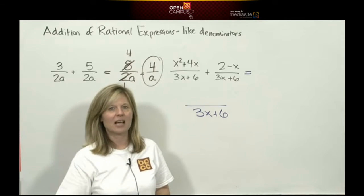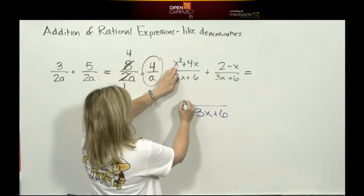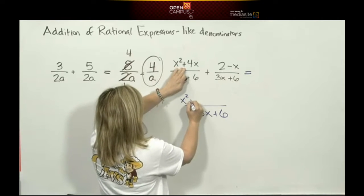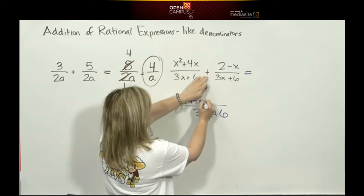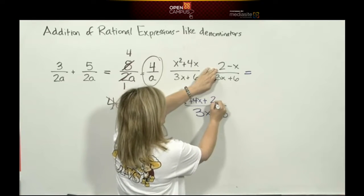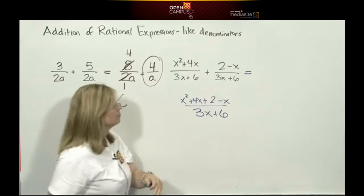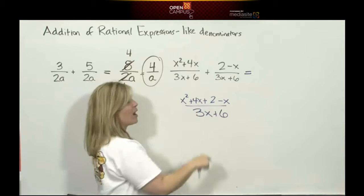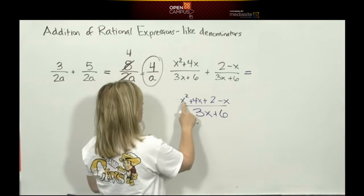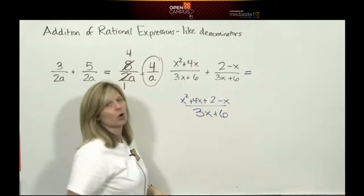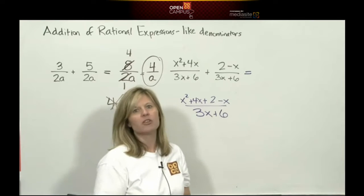The denominator is going to stay 3x plus 6. Write the bottom, collect the top. Now if this was me, I'm going to write it out. My numerator is x squared plus 4x, and I want to add to that 2 minus x. So I'm going to write it as one big fraction.